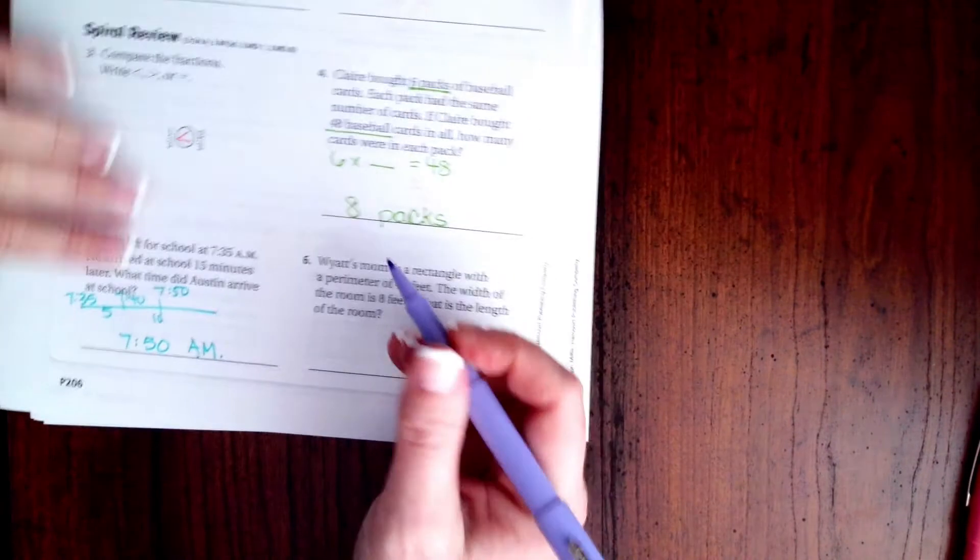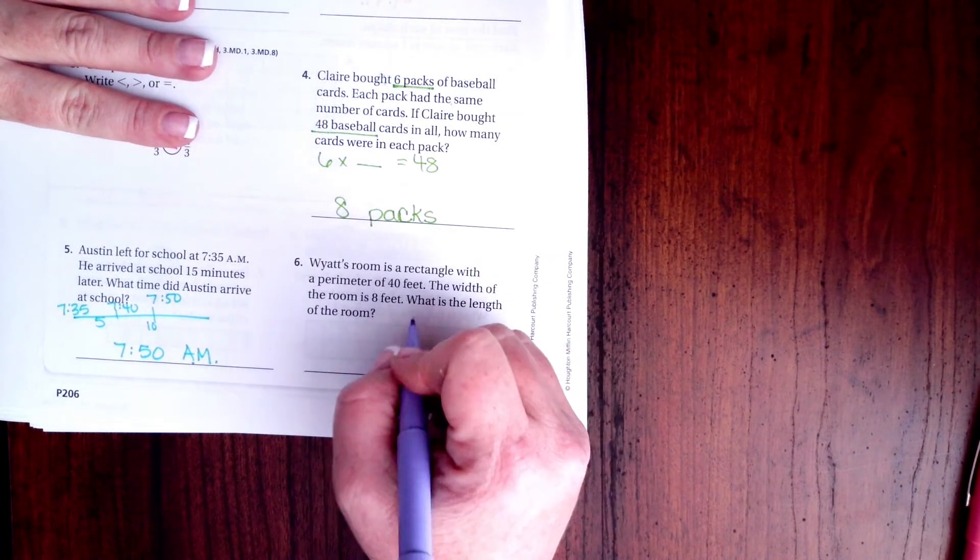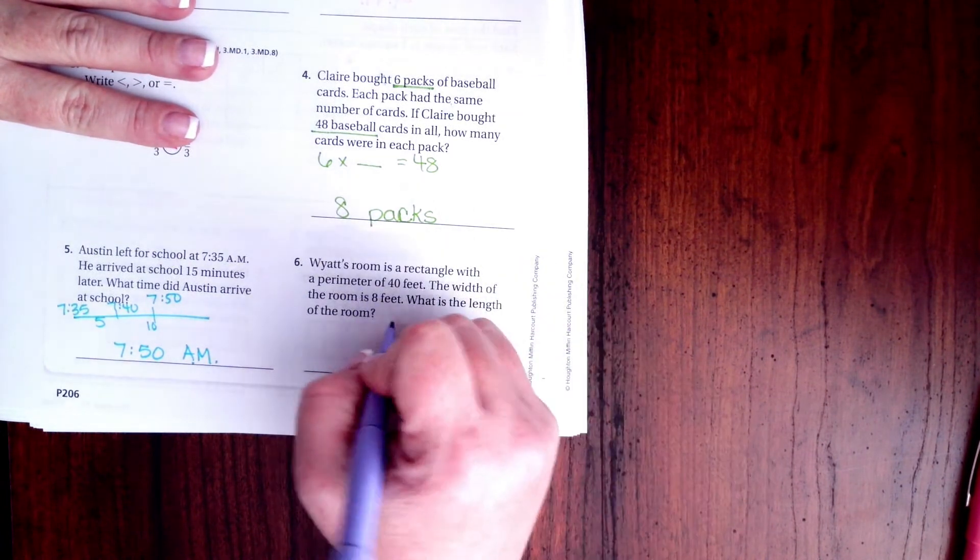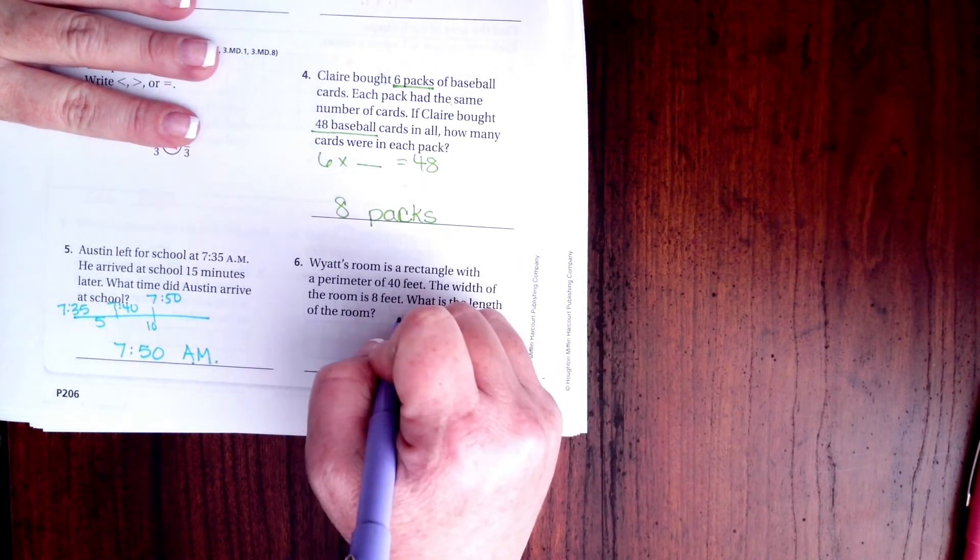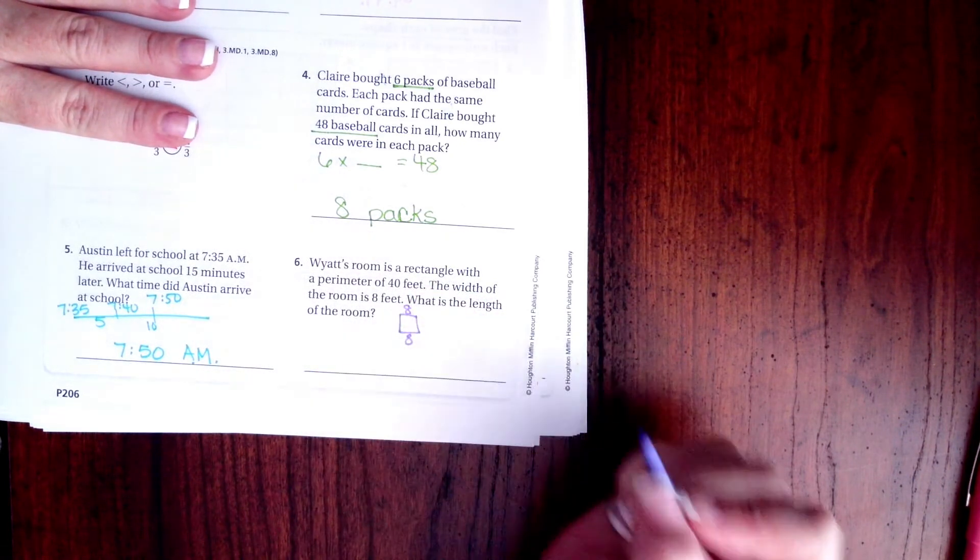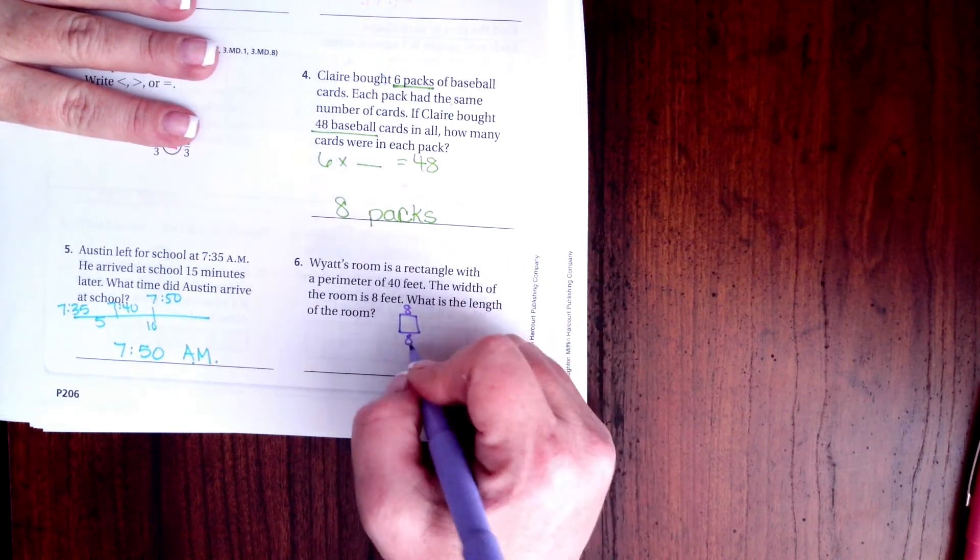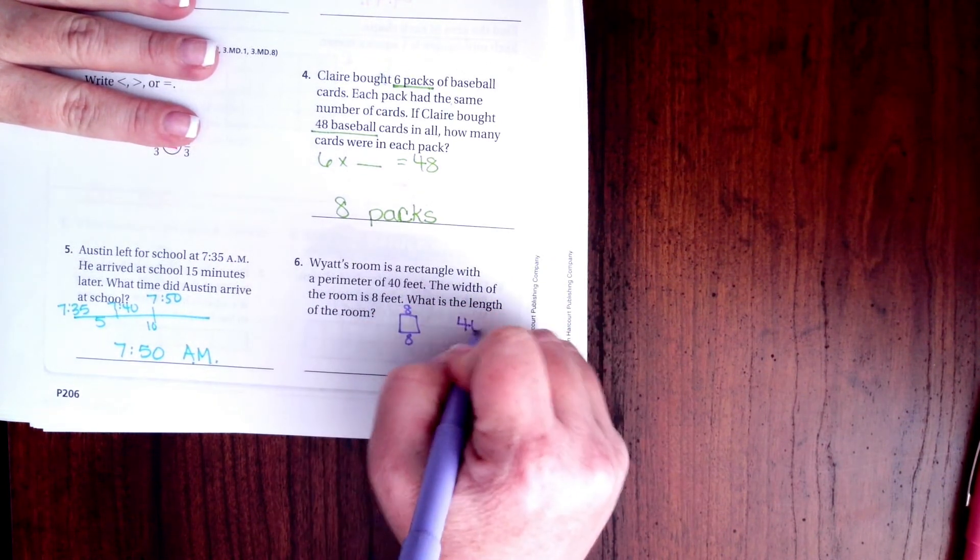Wyatt's room is a rectangle with a perimeter of 40 feet. The width of the room is 8 feet. What's the length? So if that means two of those sides are 8 feet, we need to know how long it is. Well, 8 plus 8 is 16, so I need to take our original 40 and take away 16.